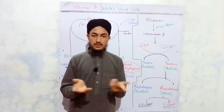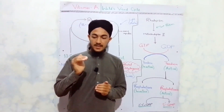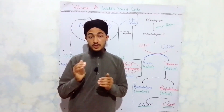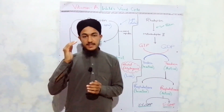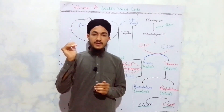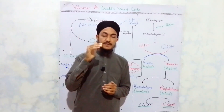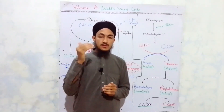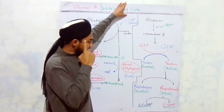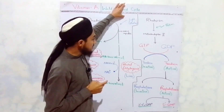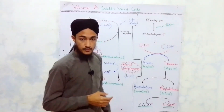Hyperpolarization occurs in the rod cells of the retina, generating action potentials. These action potentials initiate a nerve impulse that is transmitted to the visual cortex of the brain, completing the visual cycle. The brain has now received the information about what is seen in the light.